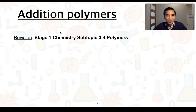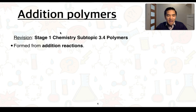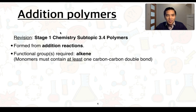Addition polymers relate back to Stage 1 chemistry subtopic 3.4 on polymers. Addition polymers can be formed from addition reactions. In order to form addition polymers we need alkene functional groups, or carbon-to-carbon double bonds. The monomers must contain at least one carbon-to-carbon double bond.